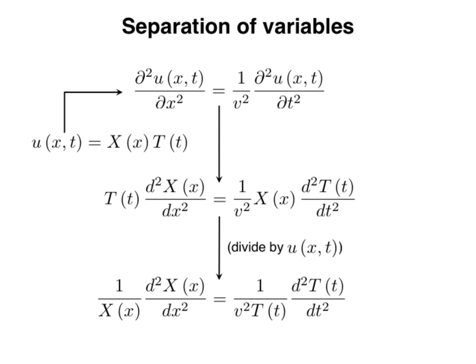We now know that the left-hand side equals the value of the right-hand side when t is fixed at zero. Since the left-hand side does not depend on t, it takes the same value regardless of how we vary t. Thus, for the equality to hold for all t, the right-hand side must also be constant and independent of t. Since both sides are constant and equal to each other, they must equal the same constant, which we denote capital K. Equating each side to K gives two separate equations, one for X(x) and one for T(t), achieving the separation of variables.